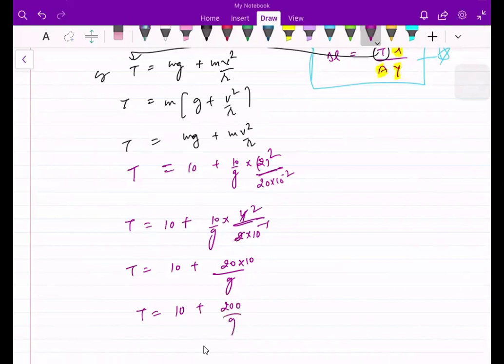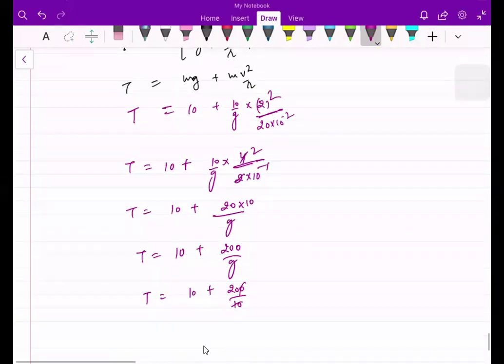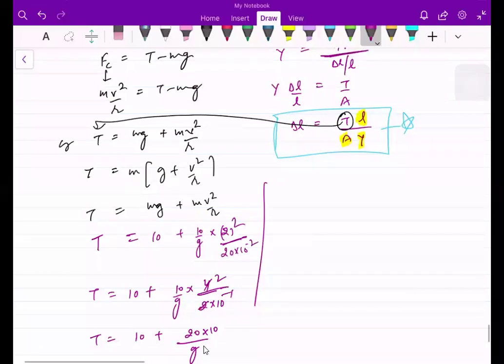200 divided by g, just to make it simple here. If I put g as 10, you will get tension as 30 newton.